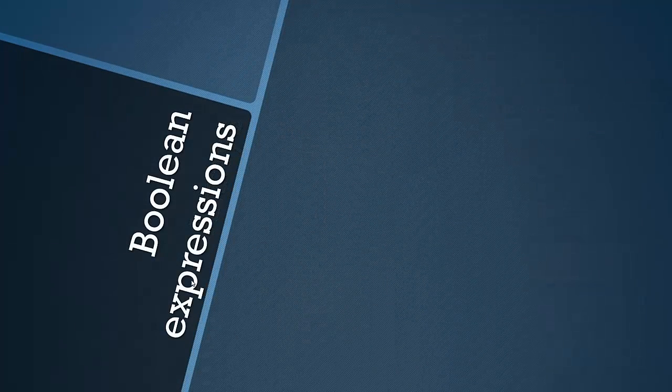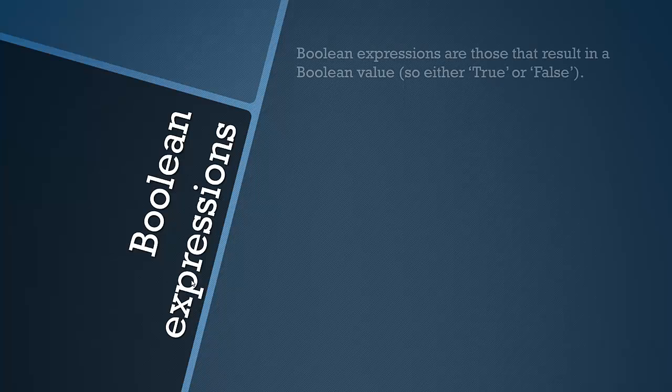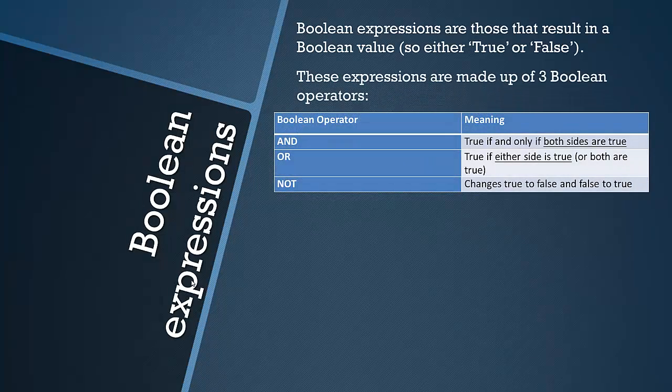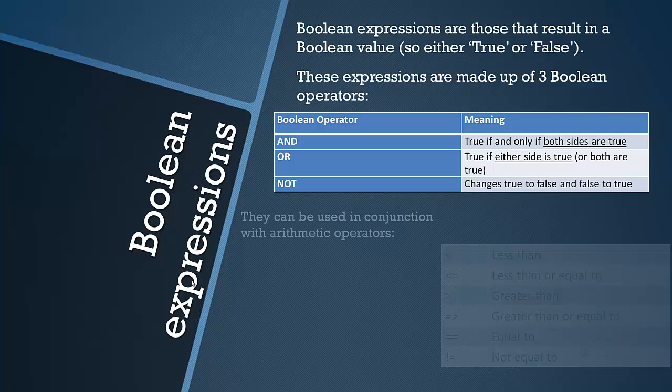Now we're going to look at Boolean expressions. This is the last subtopic in this chapter. These are expressions that result in a Boolean value, so either true or false. These expressions are made up of Boolean operators, and there are only three of them: AND, OR and NOT. AND results in true if and only if both sides are true. OR is true if either side is true or both are true. NOT changes true to false and false to true. That sounds quite complicated but it's simple logic. Boolean operators are the basis of logic and were invented hundreds of years ago before computers.